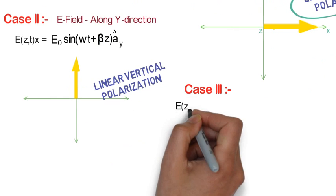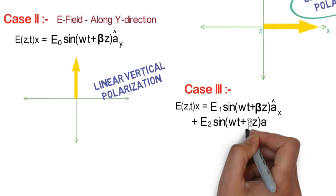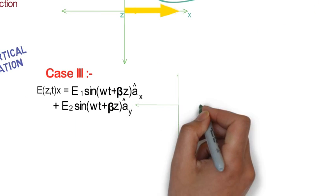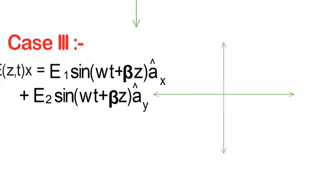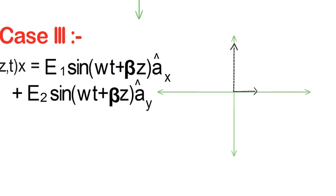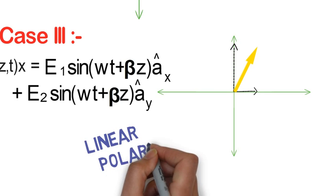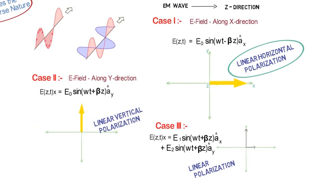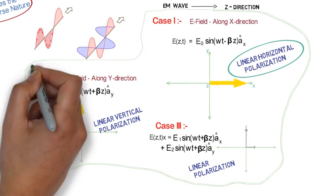In case 3, let's say we have both x and y components together. Then at a given particular time, we will have separate values for both x and y components. And in this case, we will take the resultant of the two components as the final value. This wave is also linearly polarized. So all of the above discussed cases were of linear polarization.